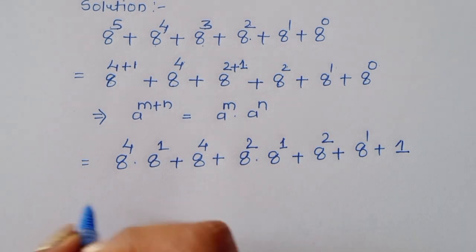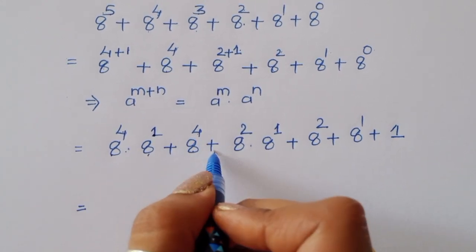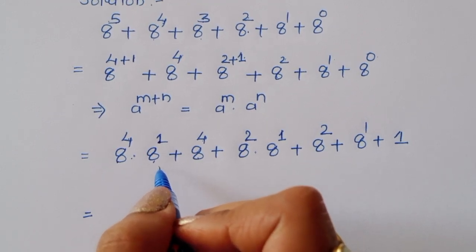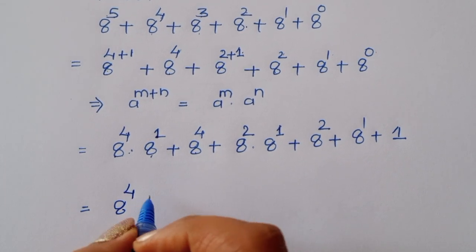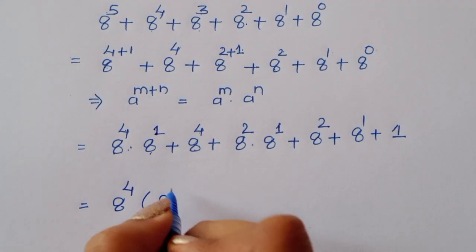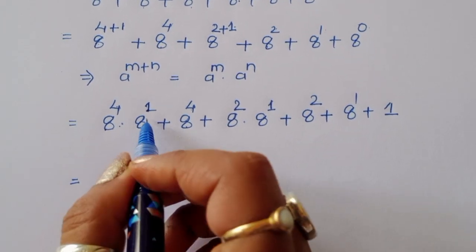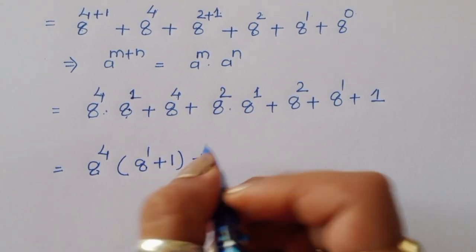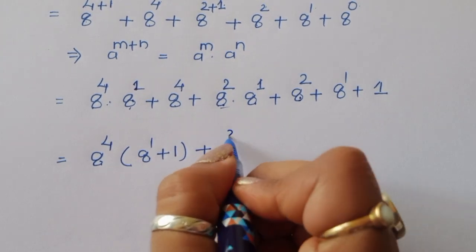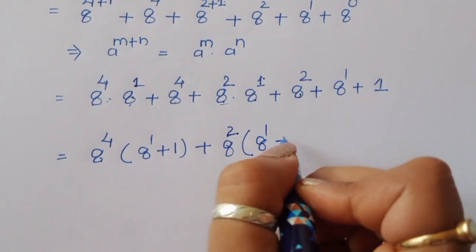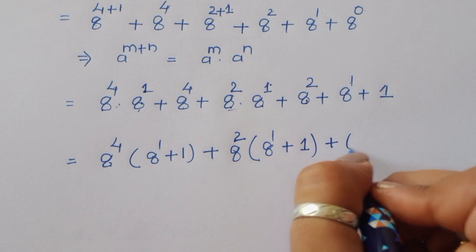Now we have: 8 power 4 times 8 power 1, plus 8 power 4, plus 8 power 2 times 8 power 1, plus 8 power 2. We take 8 power 4 as common from the first two terms: 8 power 4 times (8 power 1 plus 1). Then we take 8 power 2 as common from the next two terms: 8 power 2 times (8 power 1 plus 1).